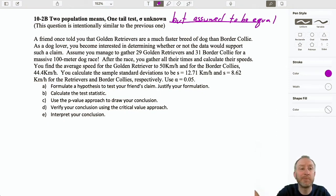So, same problem. A friend told me that Golden Retrievers are a faster breed of dog than a Border Collie. We are interested in determining whether the data would support this claim. So we get the same sample, 29 Golden Retrievers, 30 Border Collies. Again, I like to highlight these bits of information.